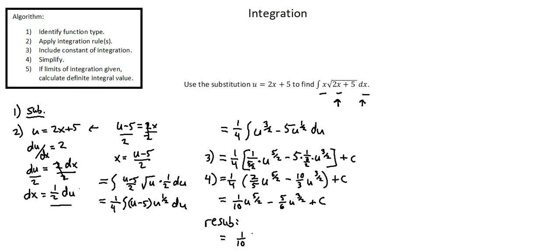Looking back, the given substitution is u equals 2x plus 5. So we replace u with 2x plus 5 to the power of 5 over 2, minus 5 over 6 times u to the power of 3 over 2 — again replacing u with 2x plus 5 to the power of 3 over 2, plus c. Now we have an equation in terms of x. Notice with substitution it's very important to make sure you work all the way through — the problem asks for an integral with respect to x, so our answer needs to be in terms of x. This concludes integration using substitution example 1.